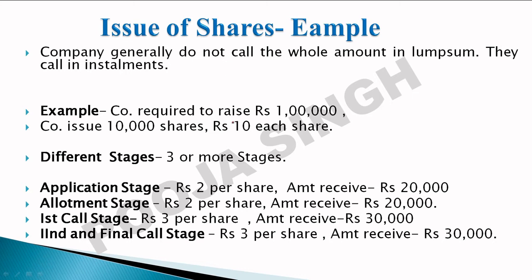Let's look at an example. A company requires 1 lakh rupees. The company has decided that each share will be 10 rupees. So the number of shares to be floated = 1,00,000 ÷ 10 = 10,000 shares. The company will issue 10,000 shares in the market. There are 4 stages.